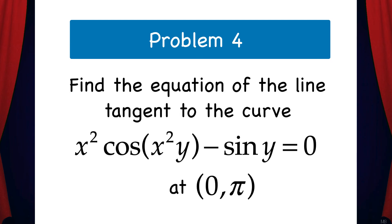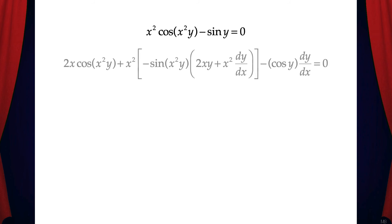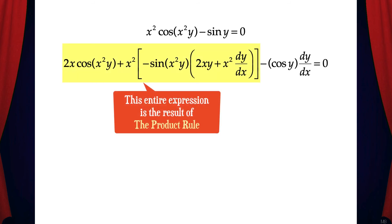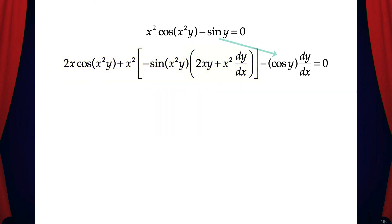Find the equation of the line tangent to the curve x squared cosine of x squared y minus sine y equals 0 at the point (0, π). In order to find the equation of the tangent line we need the slope, so we need to take the derivative. Let's go term by term. To find the derivative of x squared times cosine of x squared y we need to use the product rule. That gives us 2x times cosine(x²y) plus x squared times the quantity of negative sine(x²y) times the quantity of 2xy plus x squared dy/dx, because of the chain rule. Then the derivative of negative sine y is negative cosine y times dy/dx. And all of that equals 0.